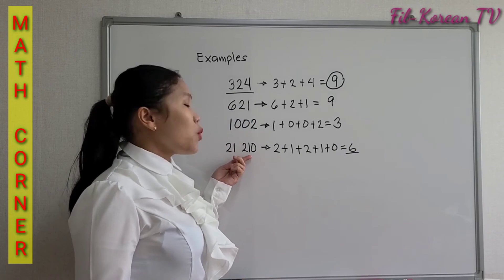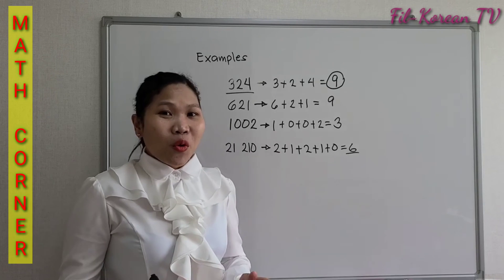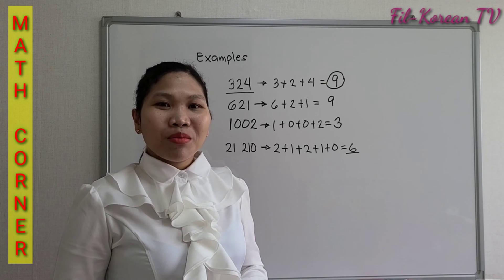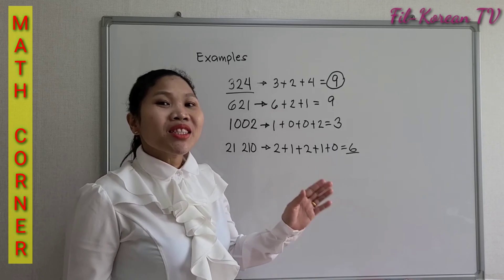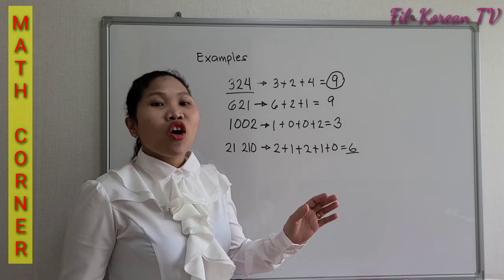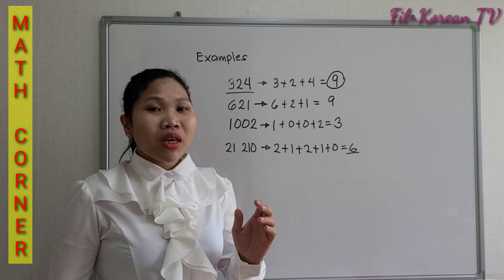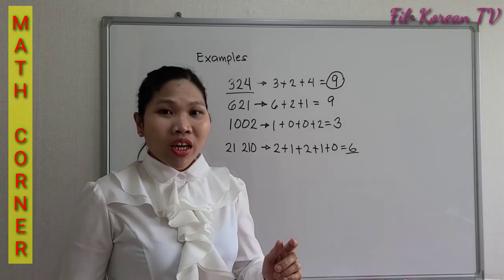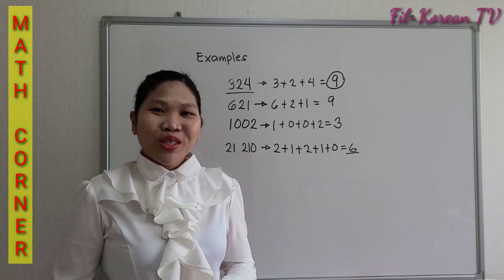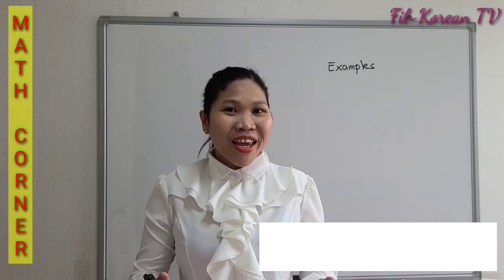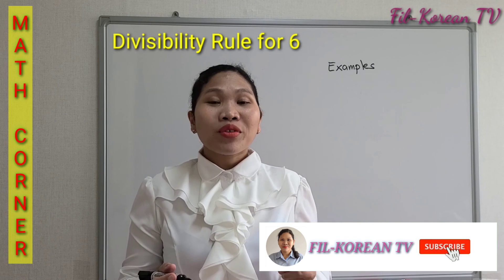6 is a multiple of 3, therefore 21,210 is divisible by 3. So that is how to determine whether a number is divisible by 3 — by just adding the digits, and if the sum is a multiple of 3, that number is divisible by 3. Now let's tackle the divisibility rule of 6.